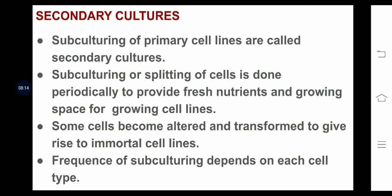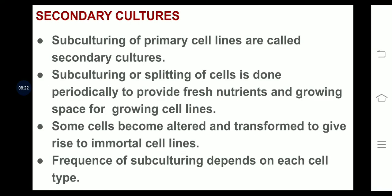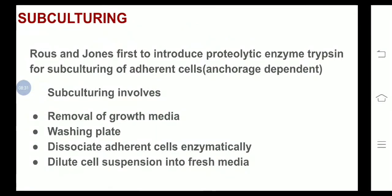Secondary cultures are always formed from primary cell lines and have chances to become transformed. Roos and Johns were the first to introduce the proteolytic enzyme trypsin for subculturing of adherent cells. Subculturing involves the following steps: removal of growth media, washing the plate or vessel used for culturing, dissociating the adherent cells enzymatically using trypsin, and diluting the cell suspension into fresh media.